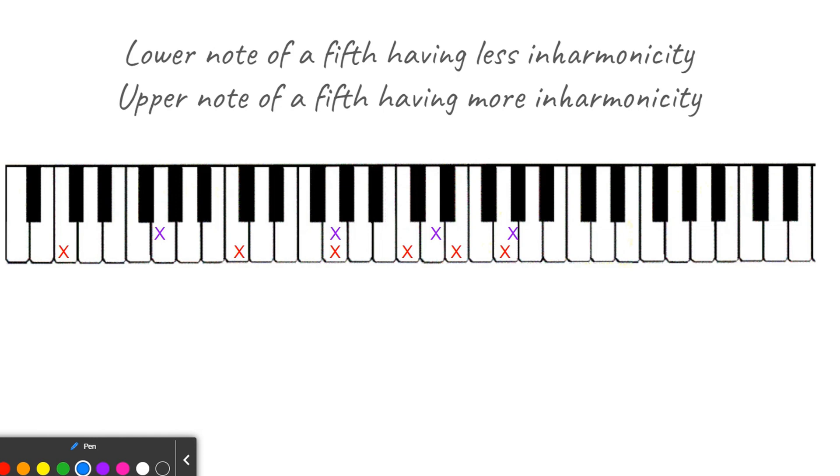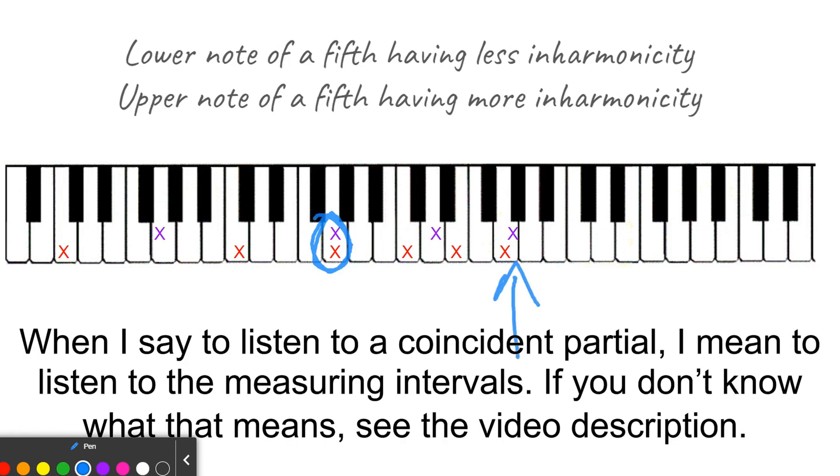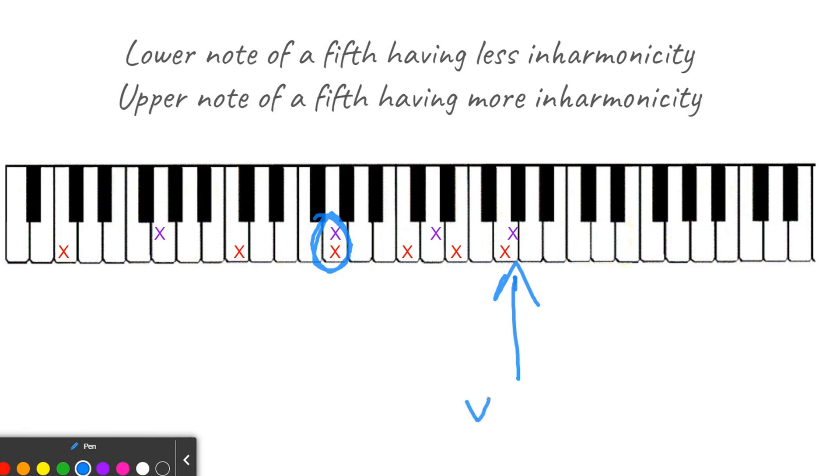So in this graphic, our lower note of C has less inharmonicity, and our upper note of G has more inharmonicity. If I tune a fifth and measure it, which you should already know, if you measure your fifth and make it pure at the first coincident partial, then measure it again and listen to the second coincident partial. If the second coincident partial measures wide, then you'll know you have more inharmonicity in the upper note and less inharmonicity in the lower note.